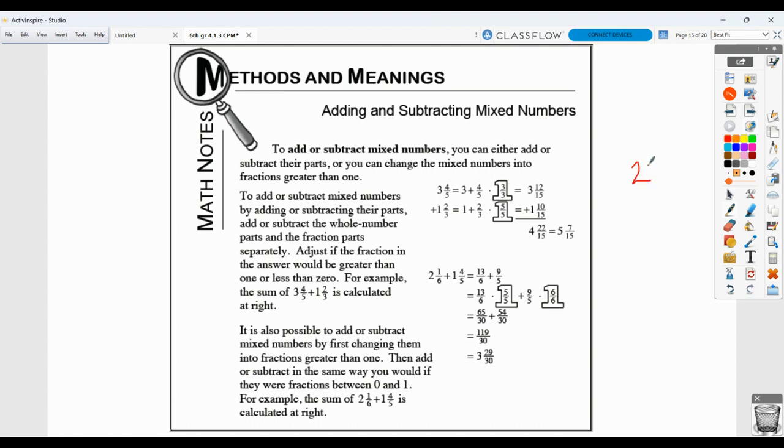So 22 fifteenths, we would take 22, divide by 15, and we're going to realize that 15 will go into 22 one whole time, 1 times 15 is 15, subtract we get 7, and so we have the mixed number 1 and 7 fifteenths. We're going to add that 1 and 7 fifteenths to the 4 that is here, and that gives us a total of 5 and 7 fifteenths. So that's one way to do it.